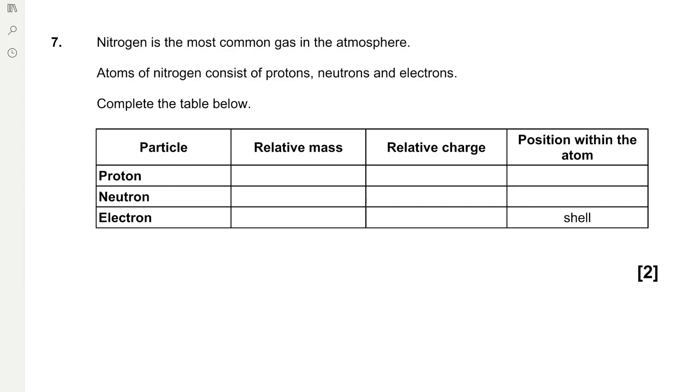The relative mass of a proton is 1, and the relative mass of a neutron is 1. Electrons have negligible mass. The relative charge of a proton is 1+. Neutrons are neutral so they have a relative charge of 0. Electrons have a relative charge of 1-. And then protons and neutrons are both located at the nucleus of the atom.